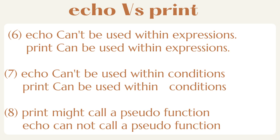Six: echo can't be used within expressions, while print can be used within expressions. Seven: echo can't be used within conditions, while print can be used within conditions. Eight: print might call a pseudo function, while echo cannot call a pseudo function.